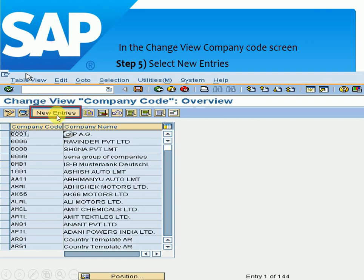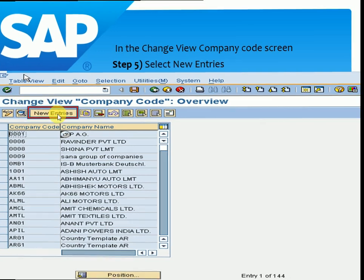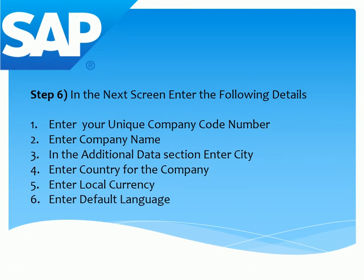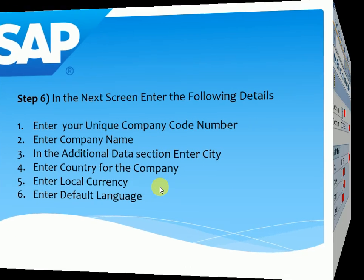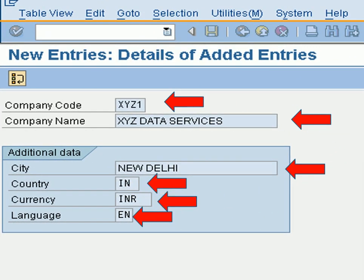After that we have to put in all the required details: enter your unique company code number, enter the company name, in the additional data section enter the city, enter the country, enter the local currency, and enter the default language.